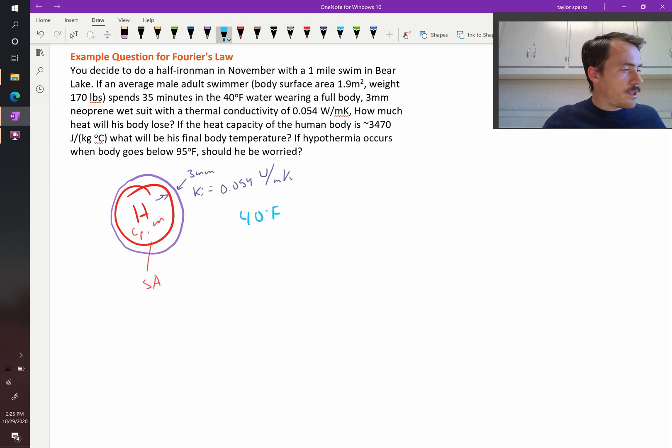The human body is 98.6 degrees, which is 310 Kelvin. So we know that heat is going to be doing this. We're going to be losing heat.